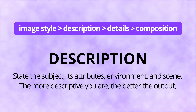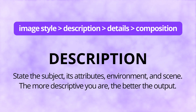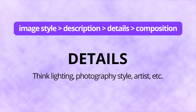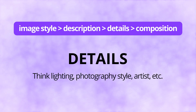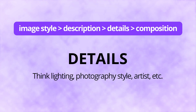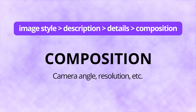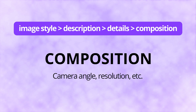Description: state the subject, its attributes, environment, and scene. The more descriptive you are, the better the output. Details: think lighting, photography style, artist, et cetera. And finally, composition: camera angle, resolution, et cetera.